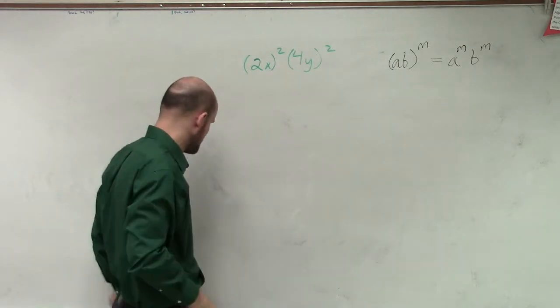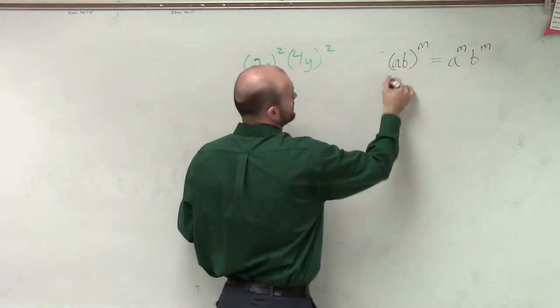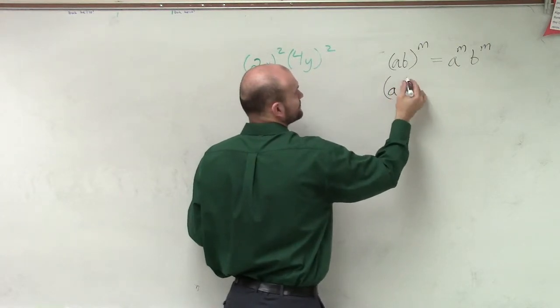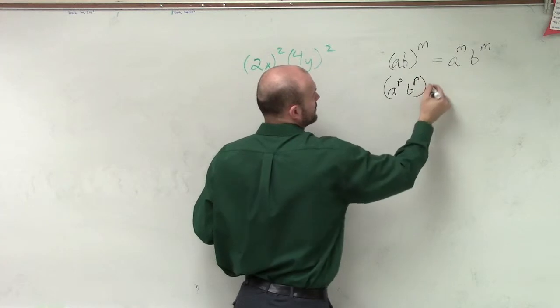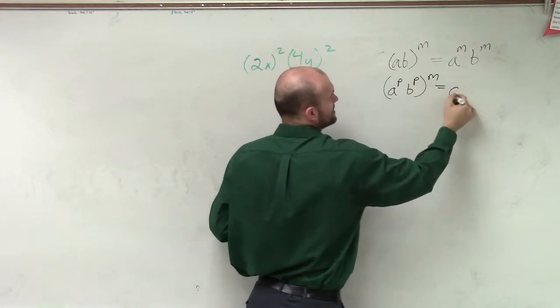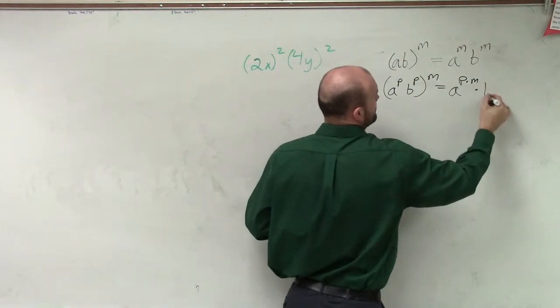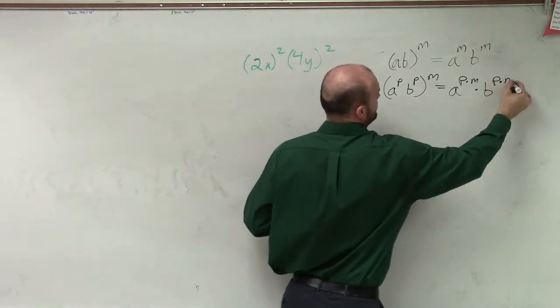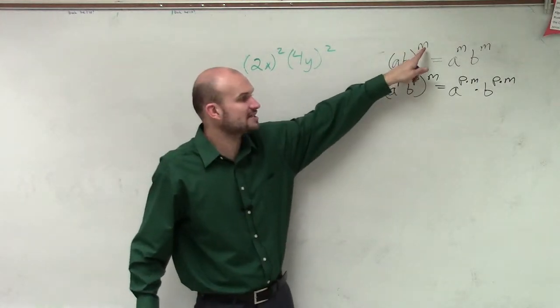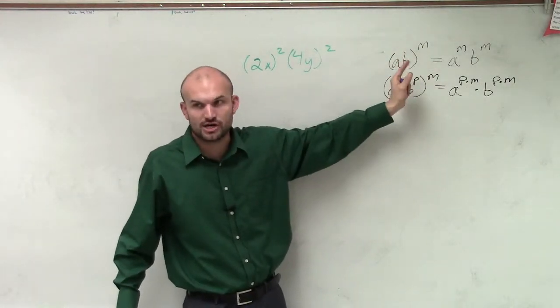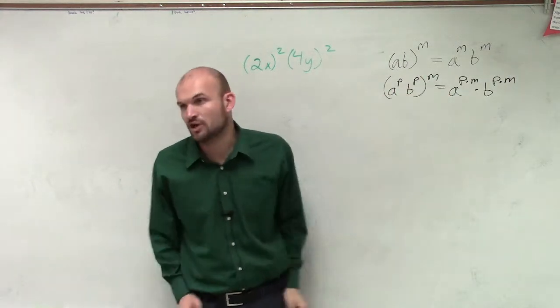And just to kind of confuse, because last class period I showed a different example of this, it still works even if I had a to the p times b to the p raised to the m power equals a to the p times m times b to the p times m. You need to make sure you multiply. There's two things. First thing is it distributes to both terms. The second thing is when you use a power of a product you're going to multiply them.